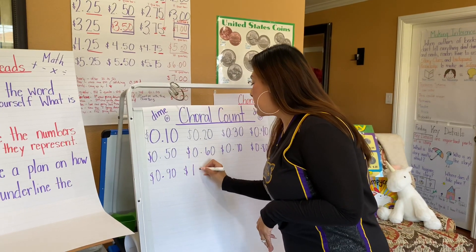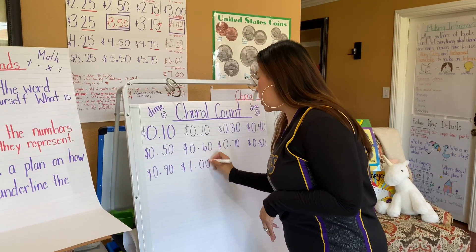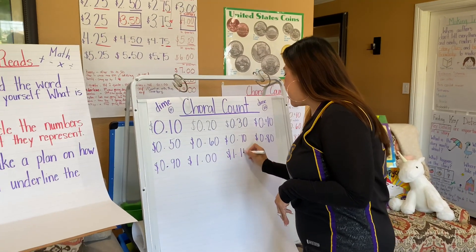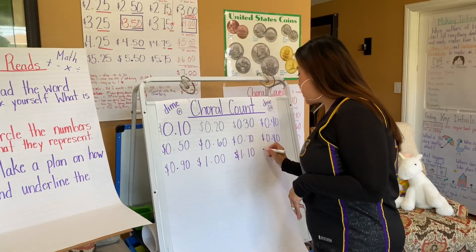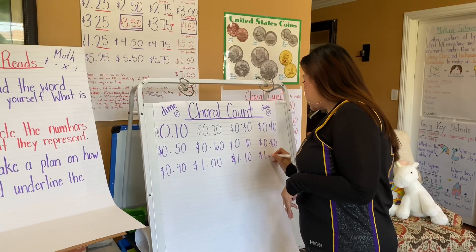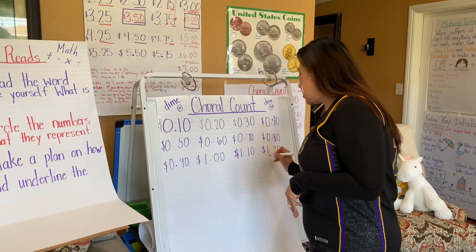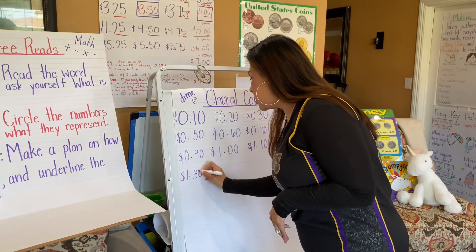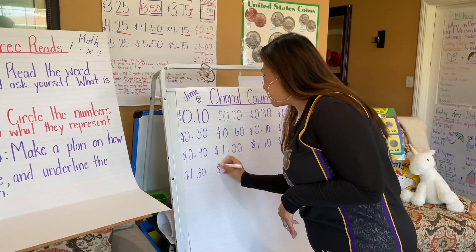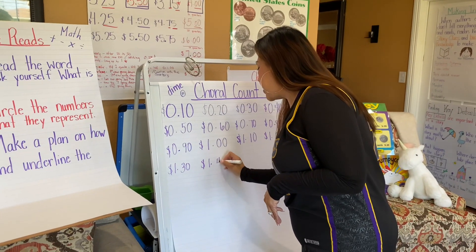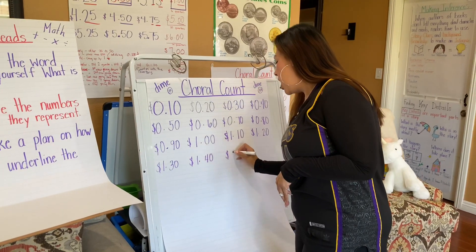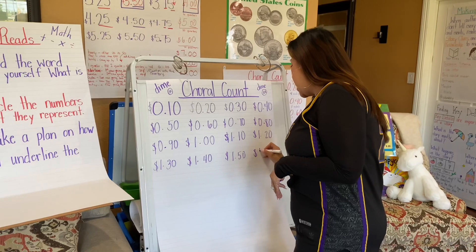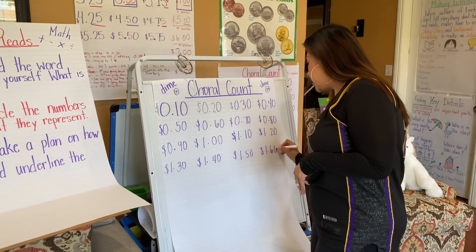What comes after 90 cents? A dollar. We're going to do $1.10, $1.20, $1.30, $1.40, $1.50, and I'm going to stop at $1.60.